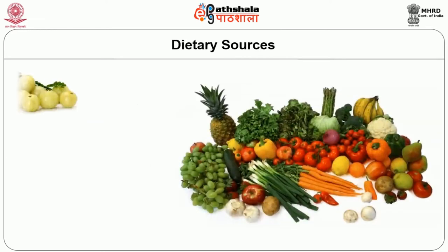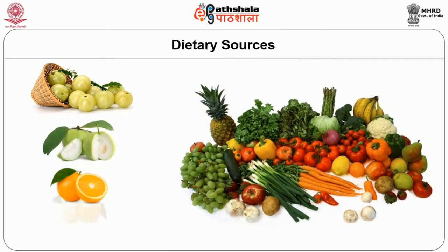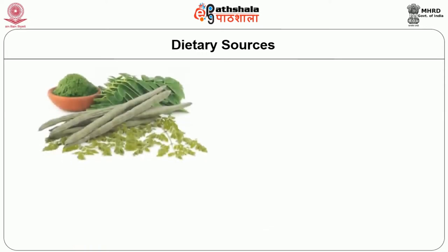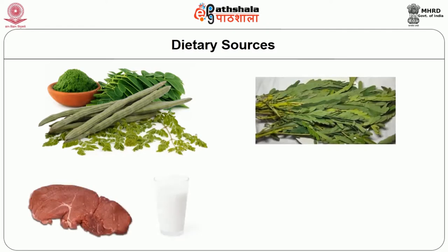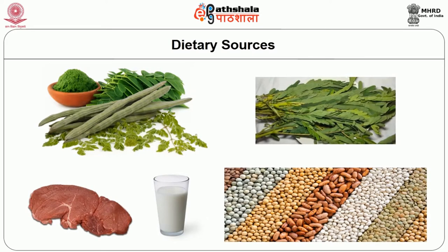Let us study about its major dietary sources. It is known to occur widely among plant foods, especially among fresh fruits and vegetables, particularly in green leafy vegetables. Amla is one of the richest sources of vitamin C. Others such as guava, orange and lime are also known to contain significantly good amounts of vitamin C. Drumstick leaves and agati are also reported to contain appreciably higher amounts of vitamin C. The vitamin C content in meat, milk, cereals and pulses is known to be very negligible.